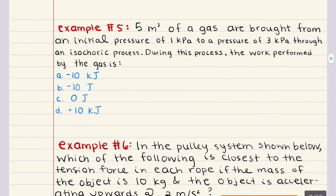Let's tackle problem five next. Problem five says five cubic meters of a gas are brought from an initial pressure of 1 kilopascal to a pressure of 3 kilopascals through an isochoric process. During this process, the work performed by the gas is blank. An isochoric process is one in which the volume of the system remains constant — something we cover in more detail in chapter three on thermodynamics. An isochoric process means the gas doesn't expand or compress.